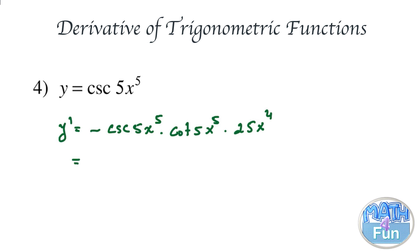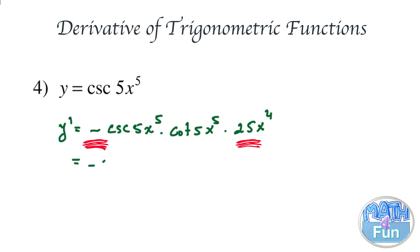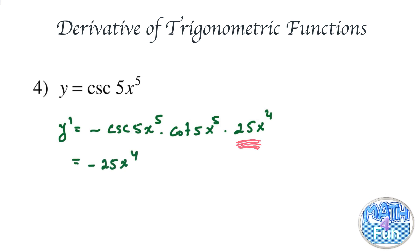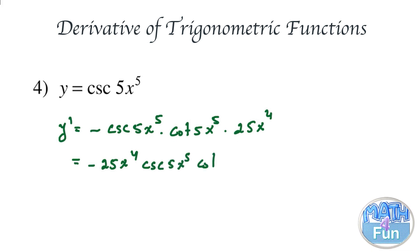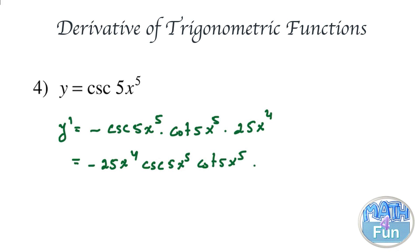Written properly, it is equal to minus 25x to the power 4 times cosecant of 5x to the power 5 times cotangent of 5x to the power 5.